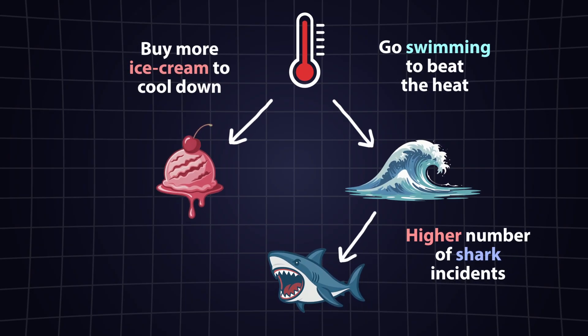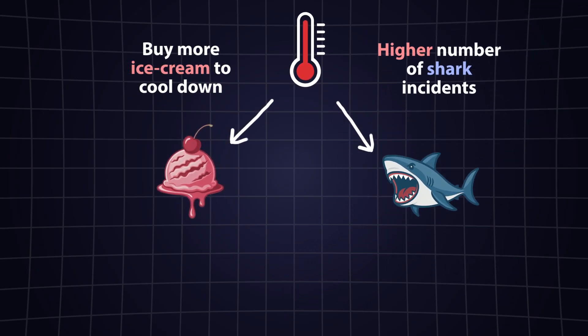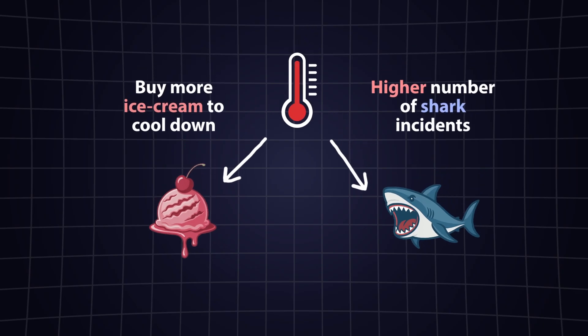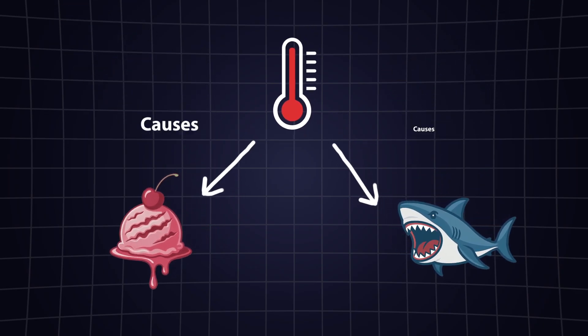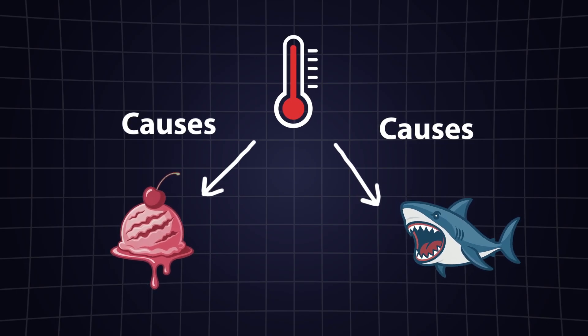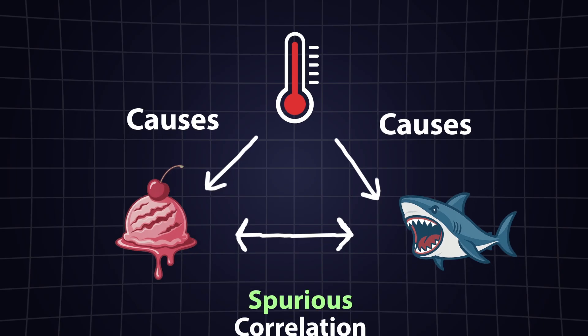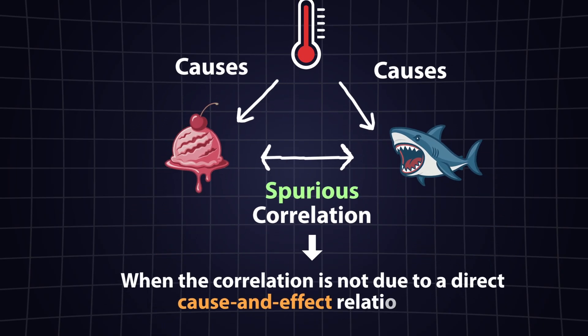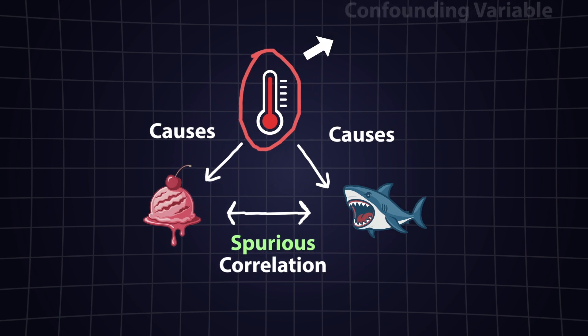If we assume that only these three factors interact with each other, without influence from any other variables, then in this simplified scenario, temperature causes both ice cream sales and shark attacks to increase, creating the appearance that these two variables are directly related.